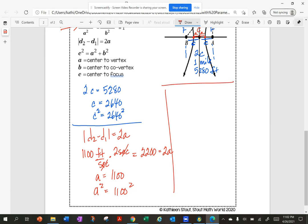So next for my equation, I need to know A squared and B squared. So I can now solve for B squared, knowing that it is C squared minus A squared. So B squared is 2,640 squared minus 1,100 squared. It's kind of easier to work with these smaller numbers rather than squaring them out. So I end up with B squared is 5,759,600.